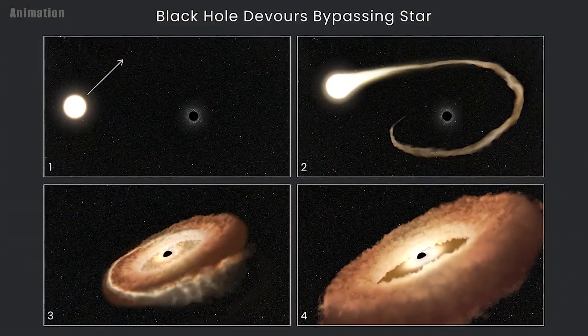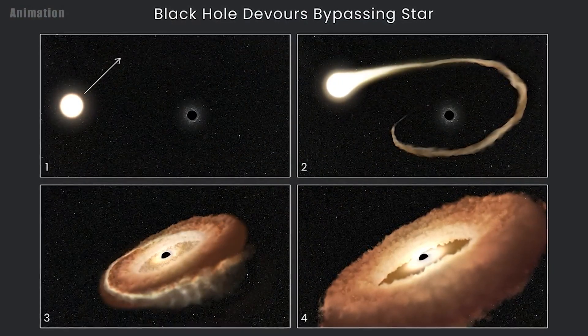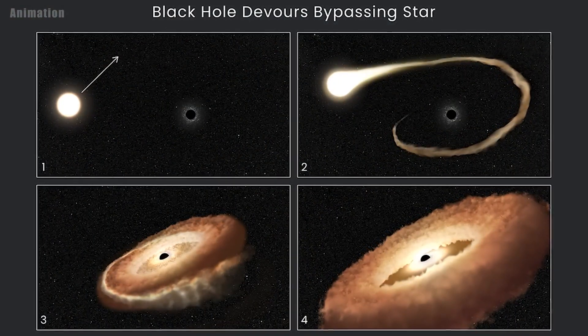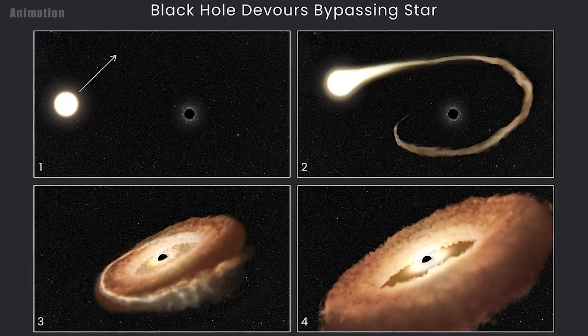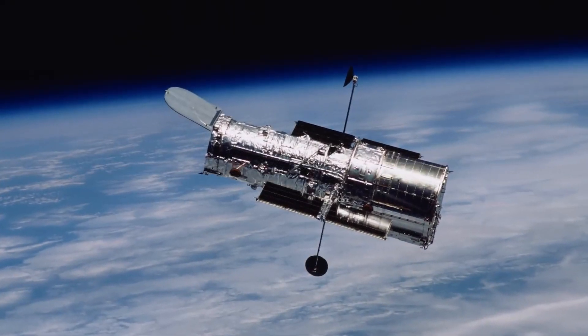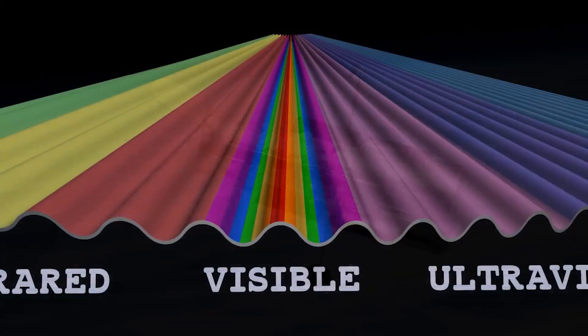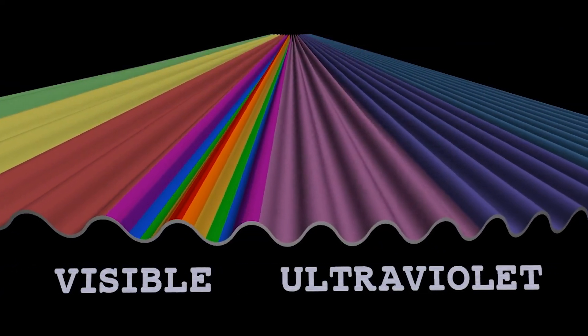Usually, astronomers get just a few observations at the beginning of a disruption event when it's very bright, but this energetic collision's proximity and brightness allowed Hubble to gather ultraviolet data over a longer-than-normal time period.